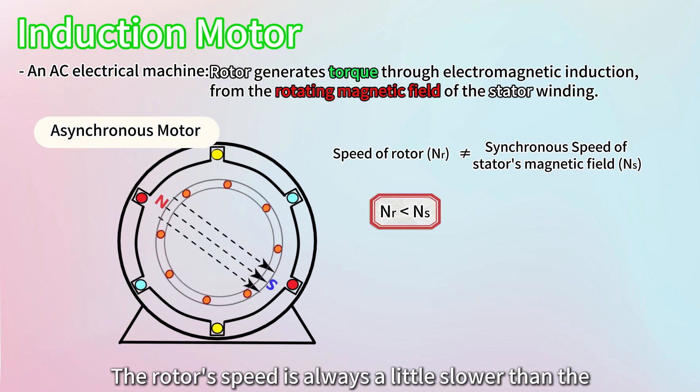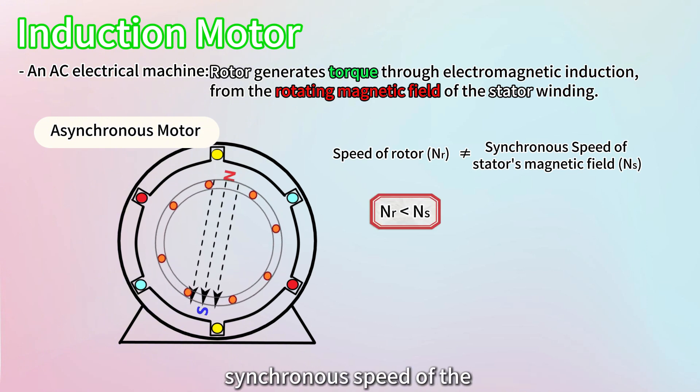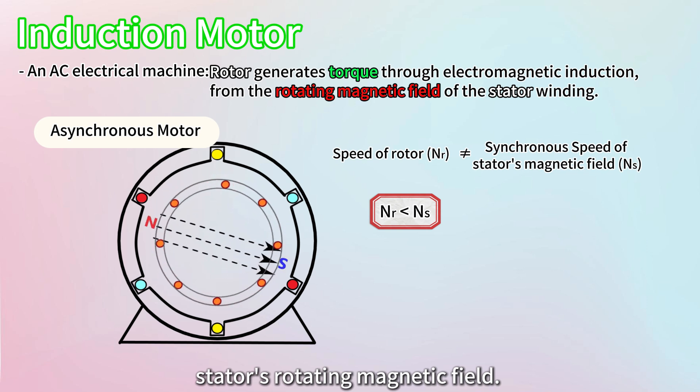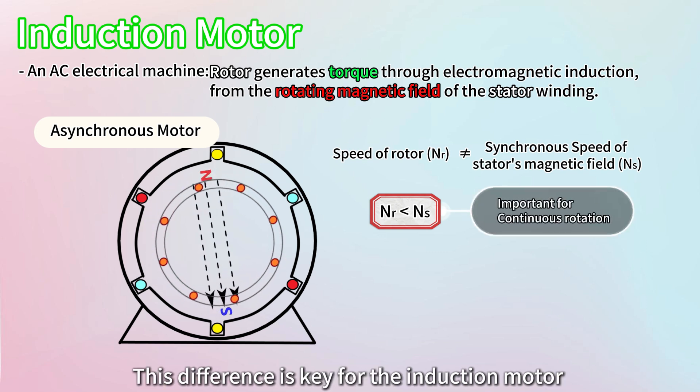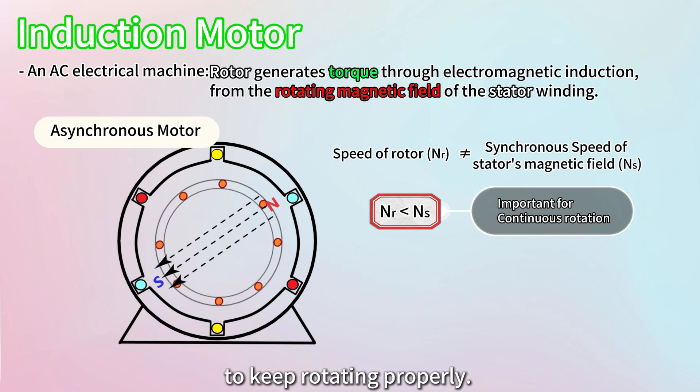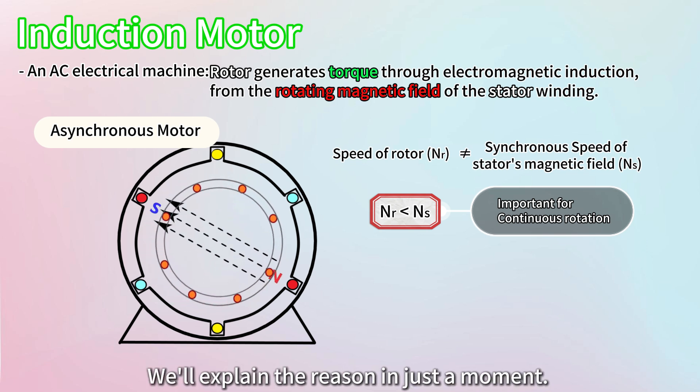The rotor's speed is always a little slower than the synchronous speed of the stator's rotating magnetic field. This difference is key for the induction motor to keep rotating properly. We'll explain the reason in just a moment.